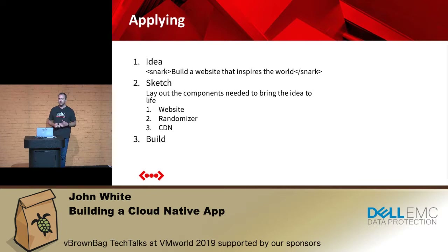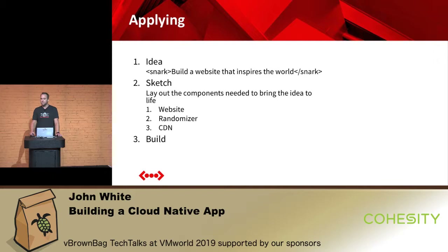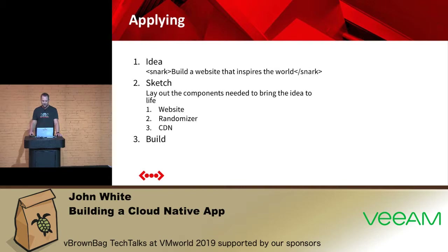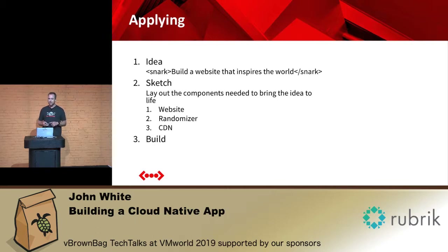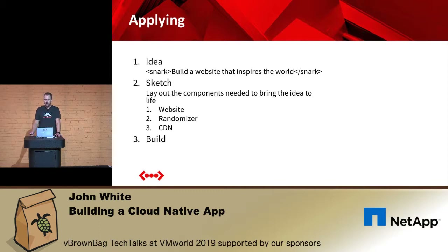The next thing I needed to do was apply this. I needed an idea, and like everybody else I wanted to build a website that inspires the world. I needed to sketch this out — I had all this new tooling I'd learned. I knew I needed a website with some randomization to bring in dynamic information, a video element, and I needed to figure out how to use a CDN inside AWS.